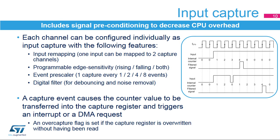This slide describes the input capture features. Each channel can be individually configured as input capture with a number of signal conditioning options. An input can be mapped on two capture channels, typically to differentiate rising edge from falling edge capture. The edge sensitivity is programmable and can be rising edge, falling edge, or both edges.